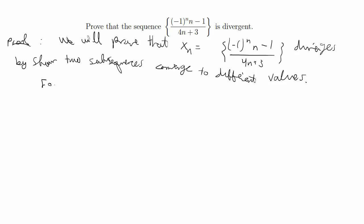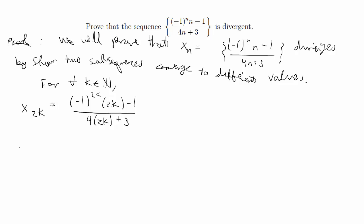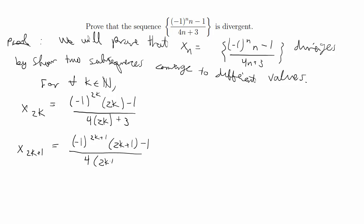Let's do the odd and even example. So for all k in the naturals, x of 2k — that would be all even values — is going to be, plugging 2k in for n: negative one to the 2k times 2k minus one over four times 2k plus three. And then for x of 2k plus one, that represents odd values. Because the naturals start at one, this would be odd values starting at three and up, but it doesn't really matter since you just need to show two subsequences diverge — you don't necessarily have to start at one.